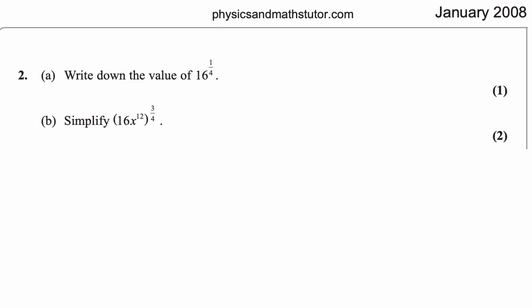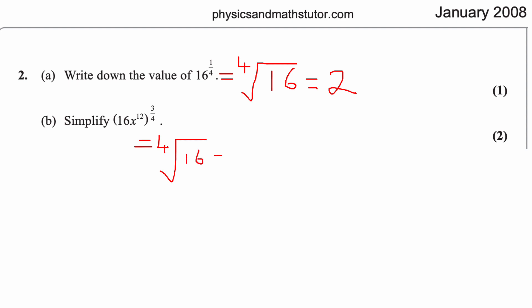Another question on fractional indices: write down the value of 16^(1/4). A power of 1/4 means the fourth root, and the fourth root of 16 is 2, because 2 × 2 × 2 × 2 = 16. Part b is trickier: simplify (16x^12)^(3/4). First handle 16^(3/4): fourth root of 16 is 2, then cube it — 2³ = 8.